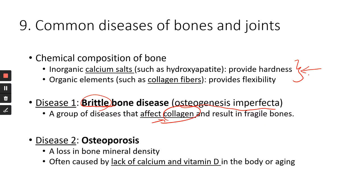The second disease is osteoporosis, which you've probably heard of — there are many drug ads targeting this disease. It's a loss in bone mineral density, a bone-thinning disease, often caused by a lack of calcium and vitamin D. Without calcium and the mineral salts, your bone lacks hardness. It can also be caused by natural aging, especially in women due to a decline in estrogen, which is important for healthy bones. So with declining estrogen and aging, many older women tend to have osteoporosis.